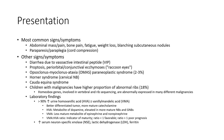Vanillylmandelic acid is a less mature metabolite of epinephrine and norepinephrine. The VMA to HVA ratio is indicative of mature catecholamines; ratio less than 1,000 versus ratio of more than 1,000.